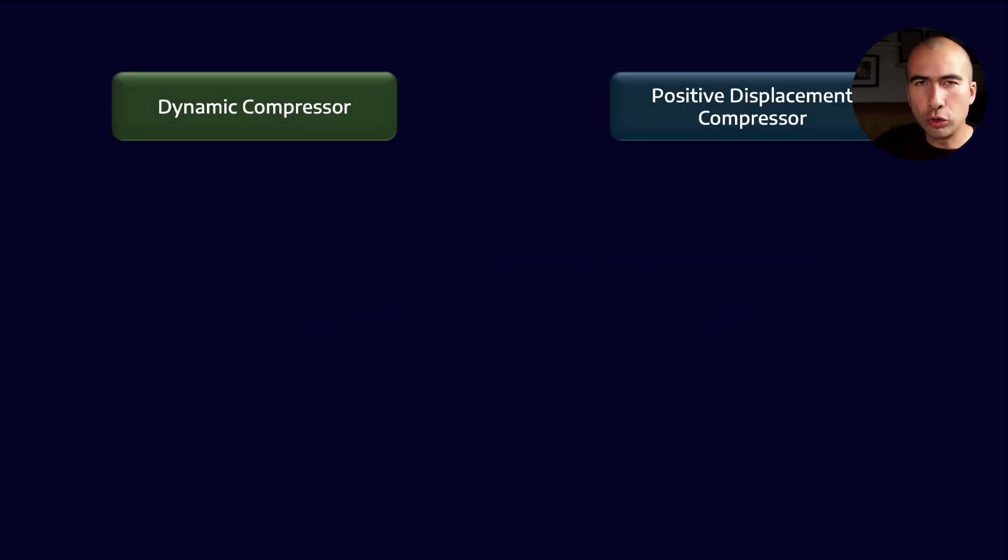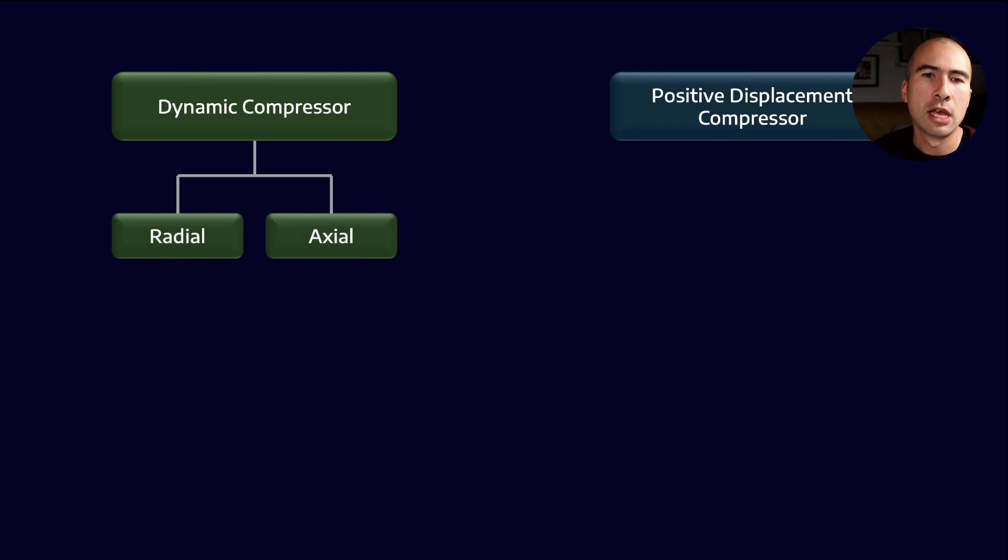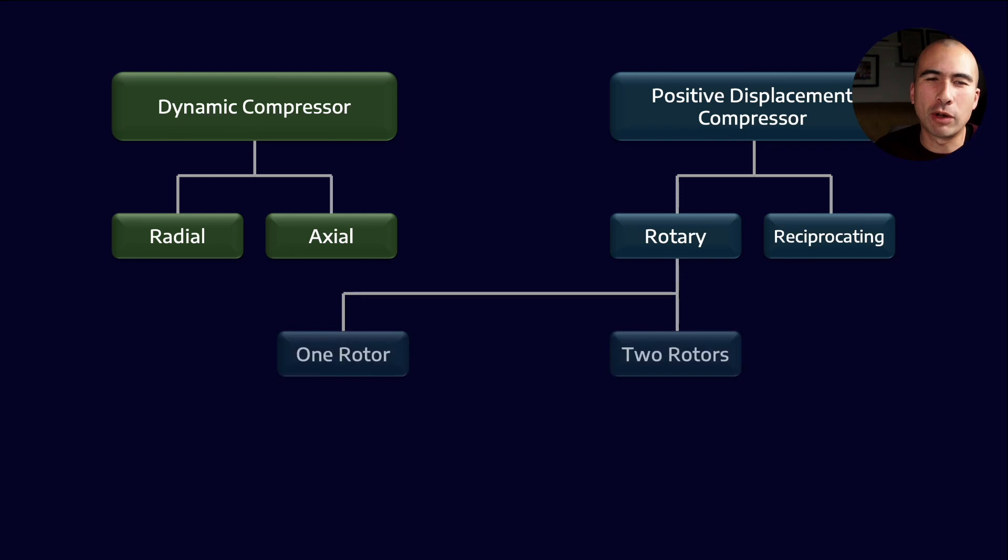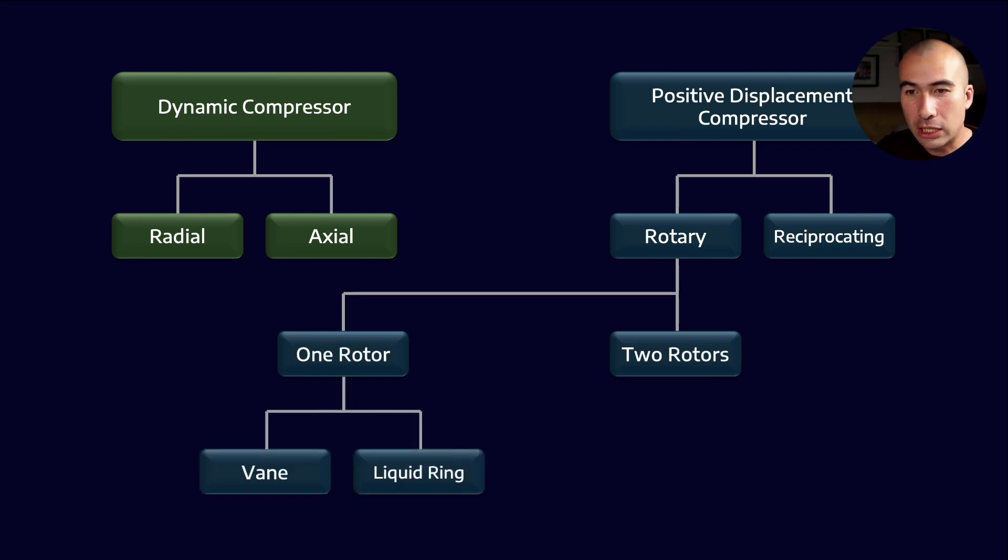If you remember, there are two broad categories of compressors. You've got dynamic and positive displacement compressors, where dynamic compressors accelerate the flow velocity and positive displacement compressors close up the space that's available to the gas. In rough terms, that's sort of what they do. And of course, there are variations on the positive displacement compressors as well.